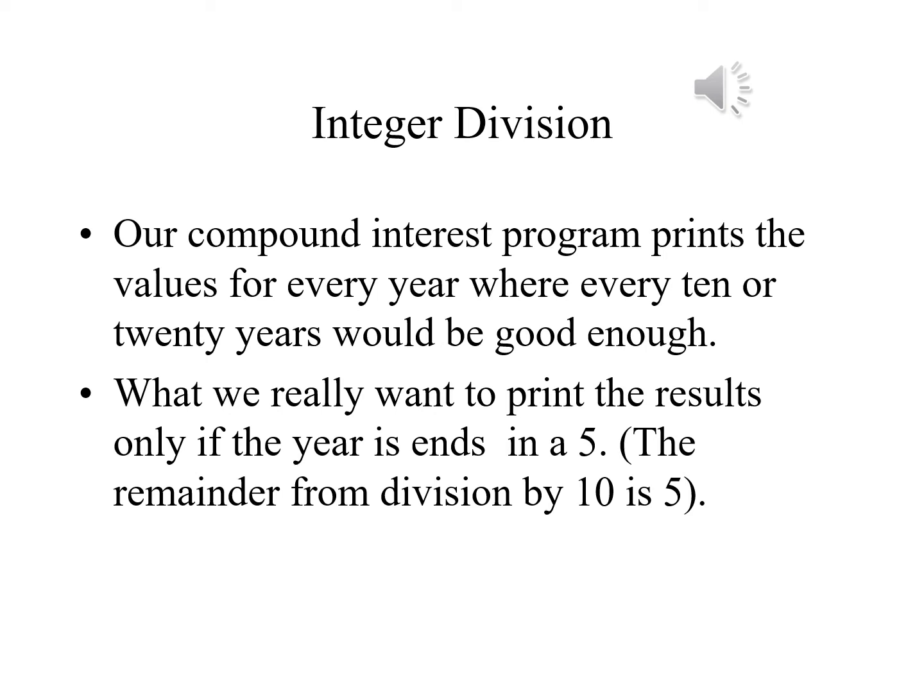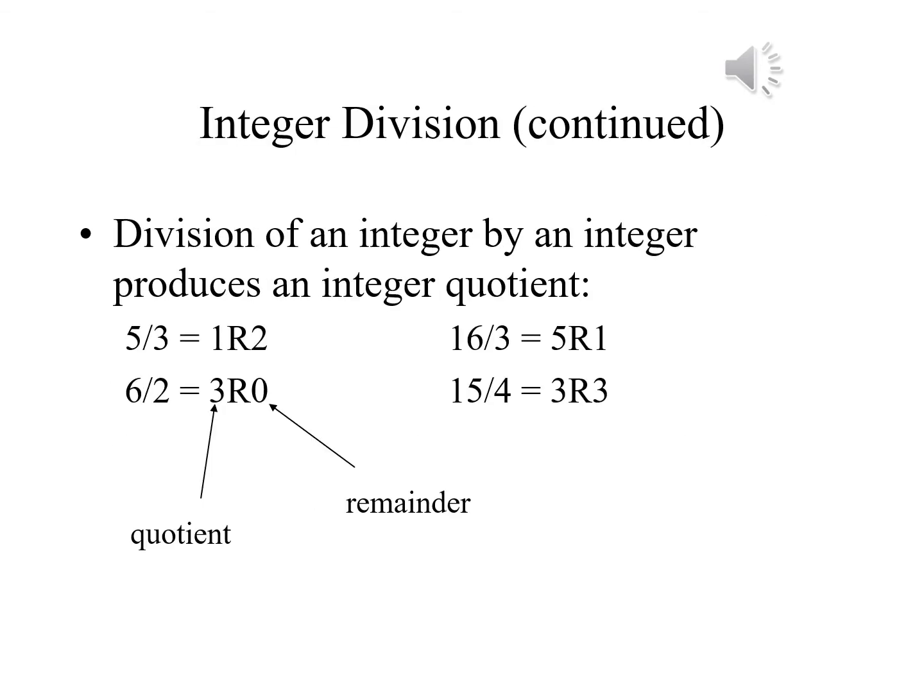There are a couple different ways we could do that. We're going to pick what may seem like the simplest way, which is to simply use integer division and take a look at the remainder that we get when we divide a year by either 10 or by 20. The temptation when we divide five by three is to say the answer will be 1.6667, but that's not how we learned to do division back in third grade. We learned that five divided by three was one remainder two, and that sixteen divided by three is five remainder one. There is a quotient and there is the remainder.